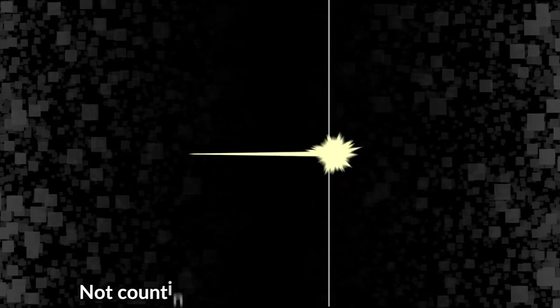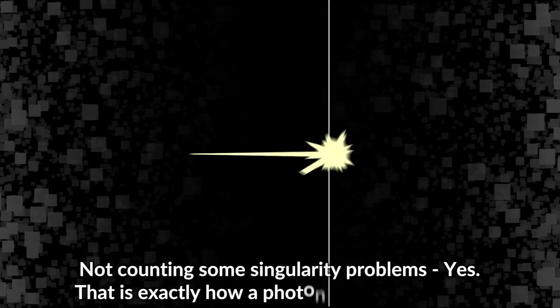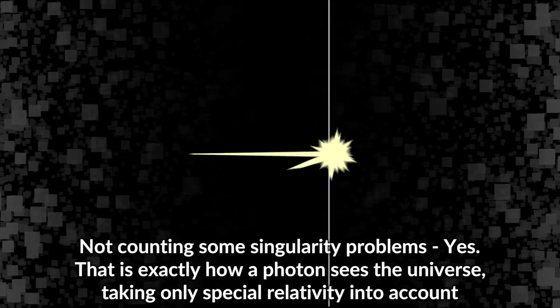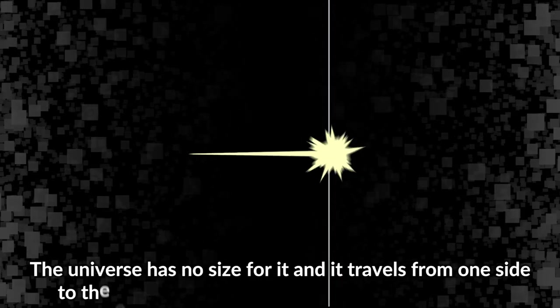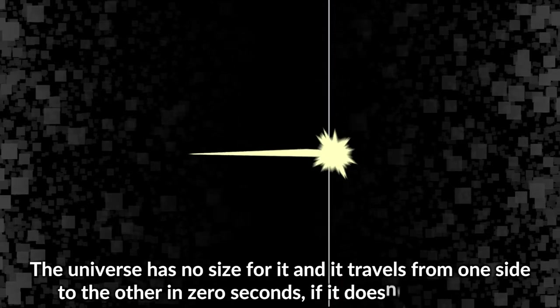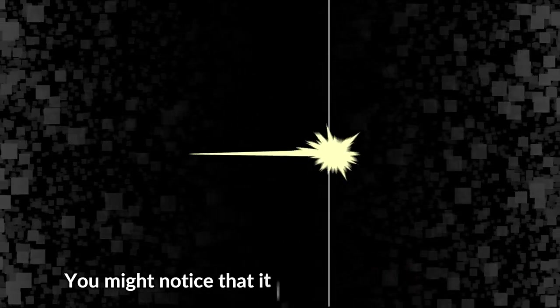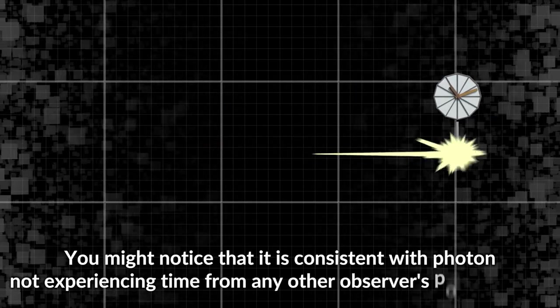Not counting some singularity problems, yes, that is exactly how a photon sees the universe, taking only special relativity into account. The universe has no size for it, and it travels from one side to the other in zero seconds if it doesn't bump into anything else on the way. You might notice that it is consistent with photon not experiencing time from many other observers' point of view.